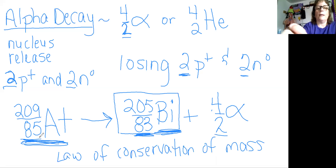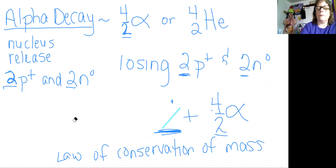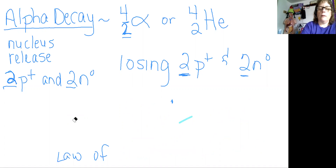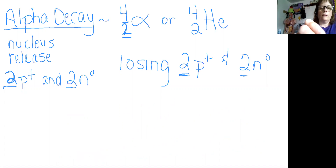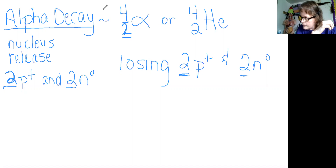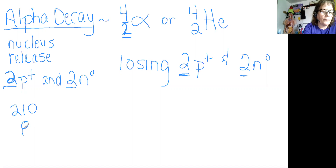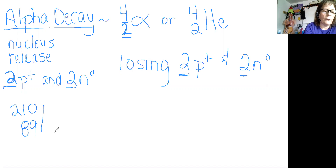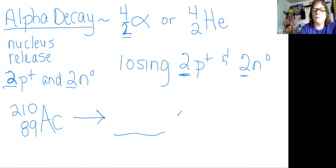All right, so that's an alpha decay. Let me give you another example, keeping our information on top so you can remember that. Let's look at this one: atomic mass of 210, atomic number of 89, and that is actinium, Ac. You've got to figure out what element it's going to turn into. Of course we know it's alpha decay already.